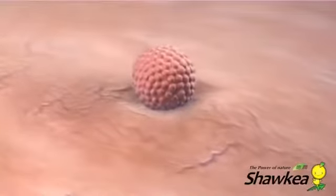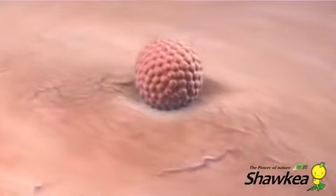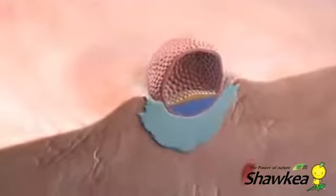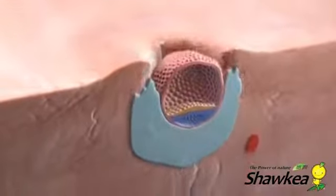During natural conception, the sperm and egg are fertilized in the ampulla of the fallopian tube, pushed by the villi. While developing, it moves towards the uterus, and after five to six days of development, it reaches the uterus in the blastocyst stage for implantation.